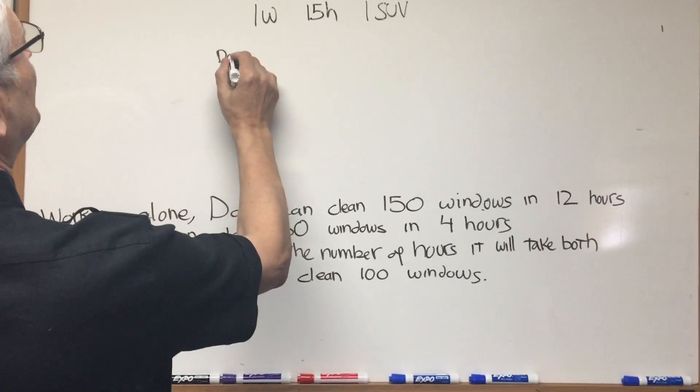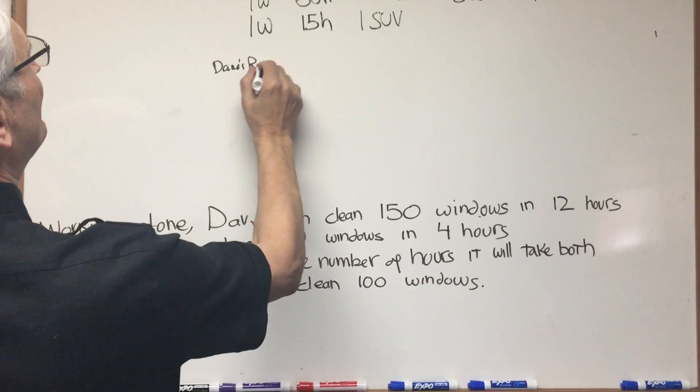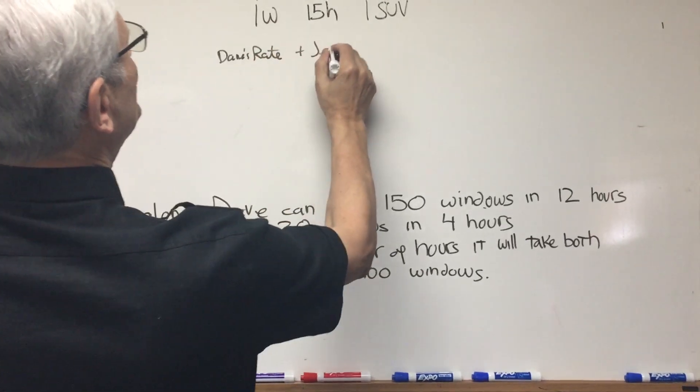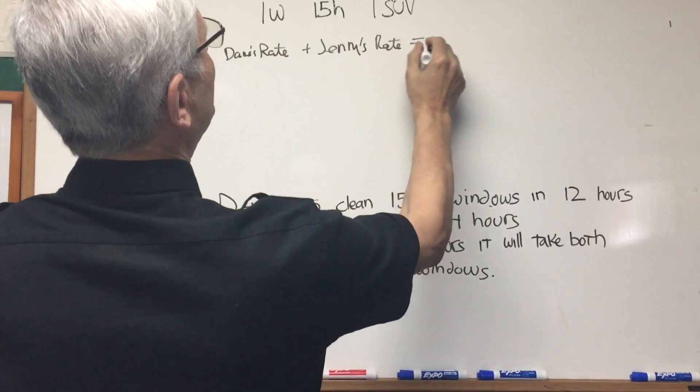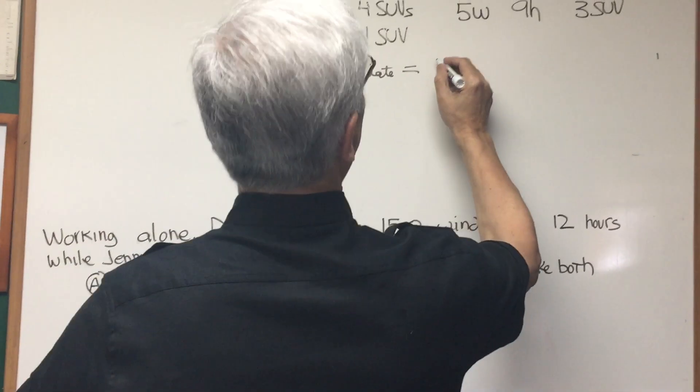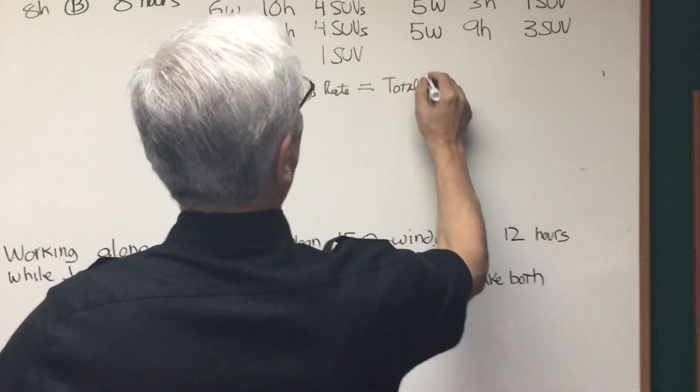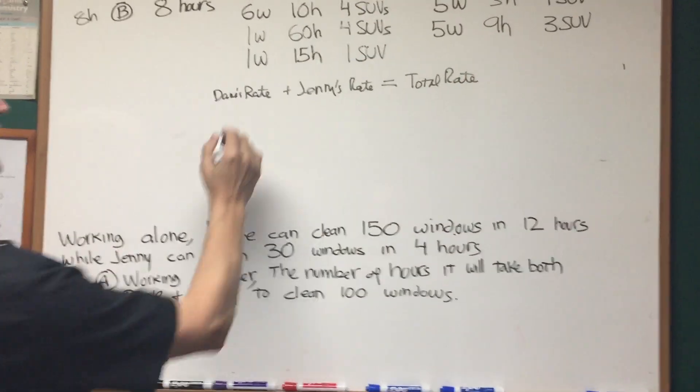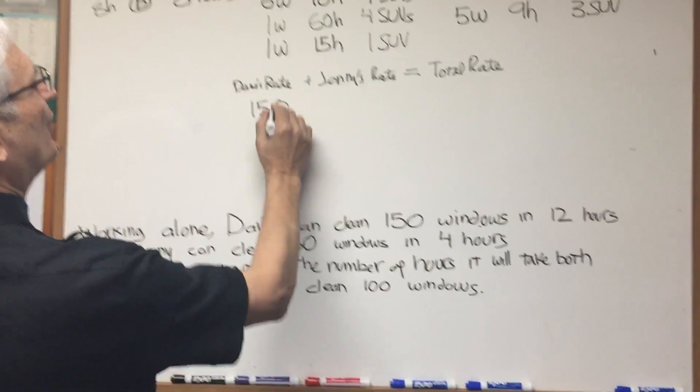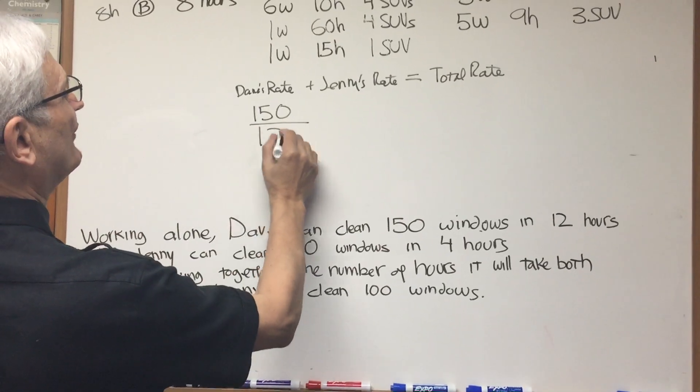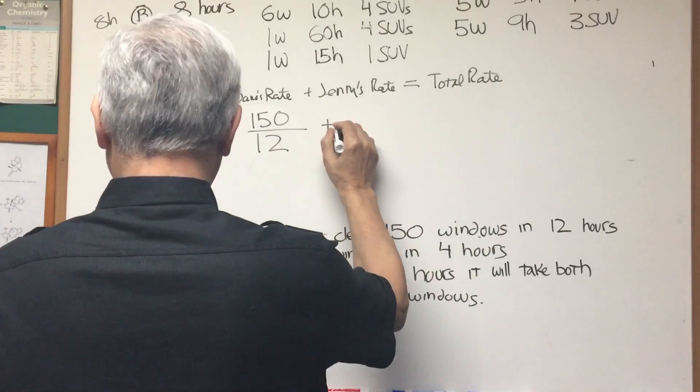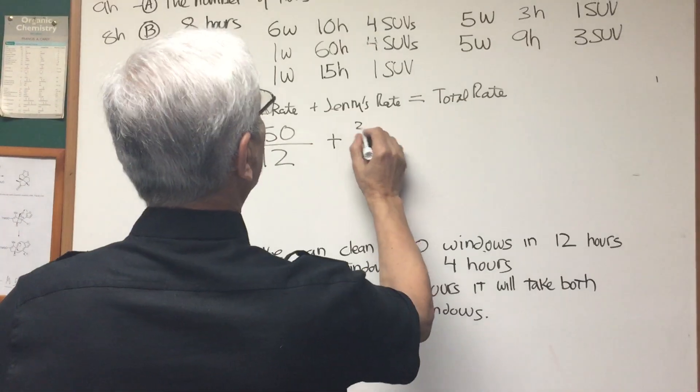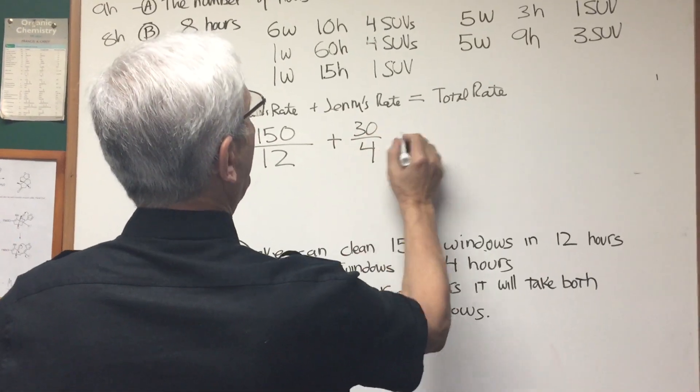We're going to have Dave's rate, plus Jenny's rate, and since they're both working on a common project, it'll be the total rate. All right, so Dave can clean 150 windows in 12 hours. Okay, that's his rate of work. Jenny can clean 30 windows in four hours. Okay?